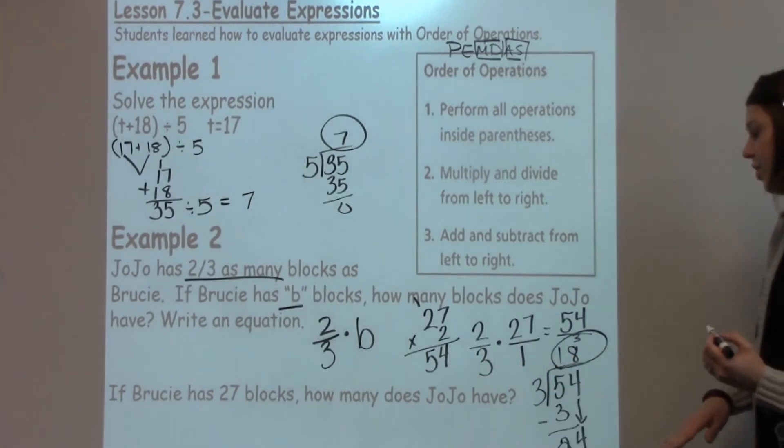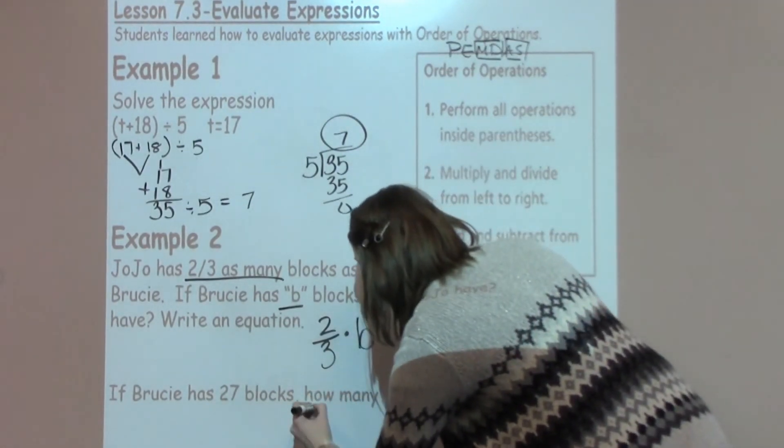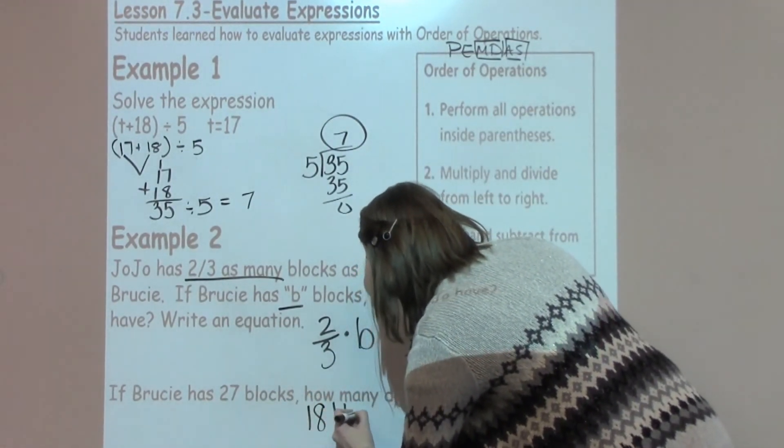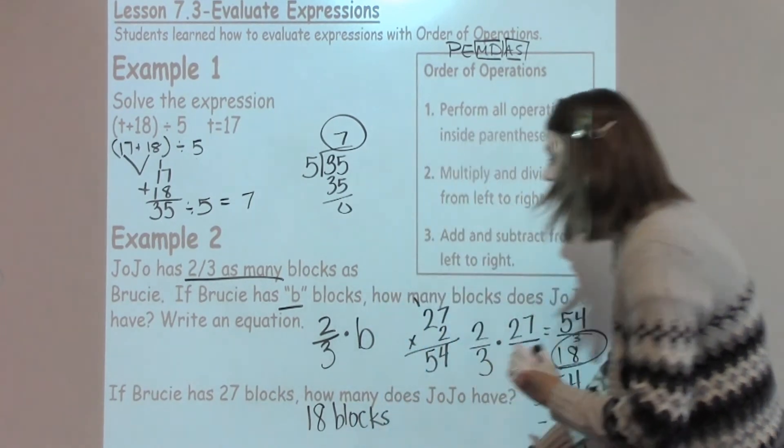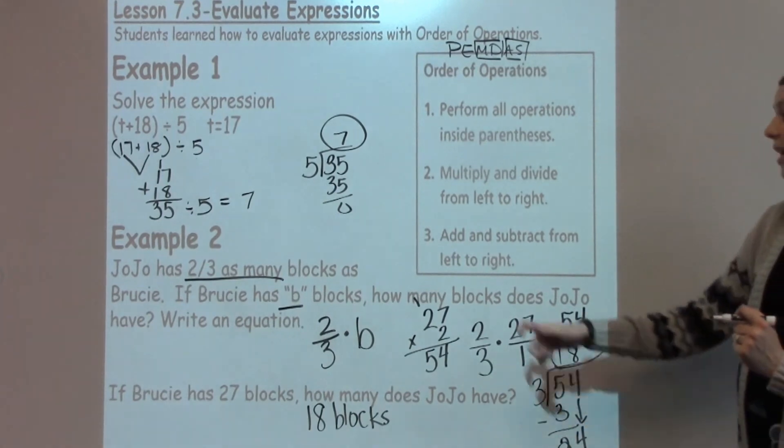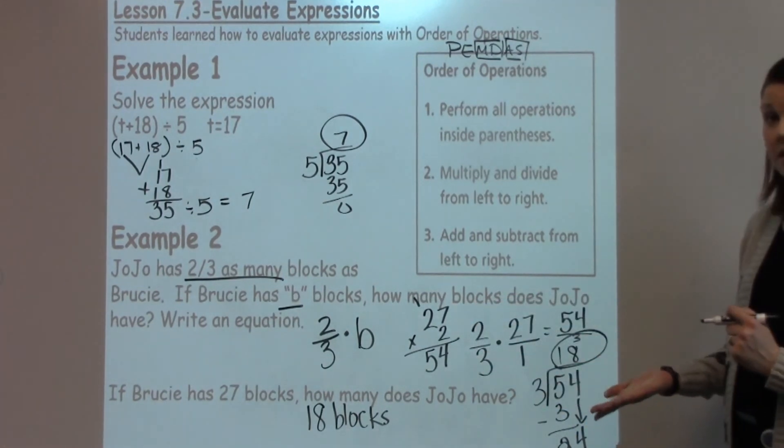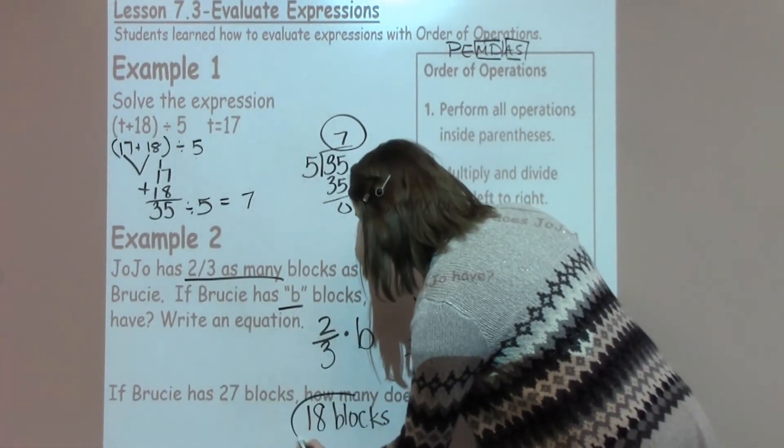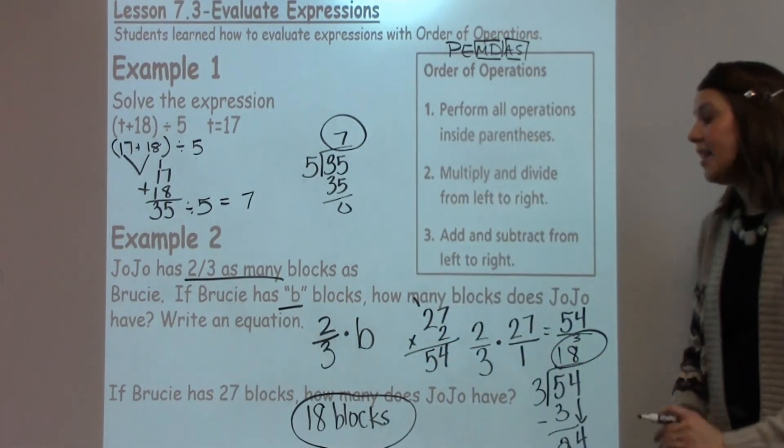Now this is how many blocks does Jojo have? Well, he has 18 blocks. Now to go back to my problem and make sure that my answer makes sense, I need to think about he's going to have fewer blocks than Brucey because Brucey has 27. So does my answer seem reasonable? It does seem reasonable. So Jojo has 18 blocks.